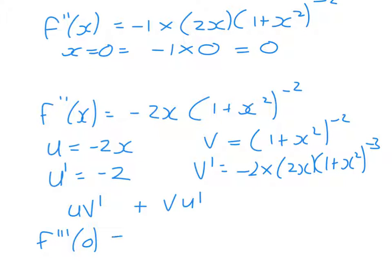So what I'm interested in is this one. So it's -2 upon (1 plus 0²)^(-2), which is -2.